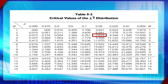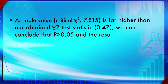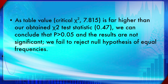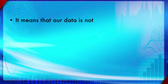Using the same chi-square table as for the test of independence, at alpha = 0.05 with 3 degrees of freedom, the critical chi-square value is 7.815. Since the critical value 7.815 is far higher than the obtained chi-square statistic of 0.47, the p-value must be higher than 0.05, and we fail to reject the null hypothesis of equal frequency.